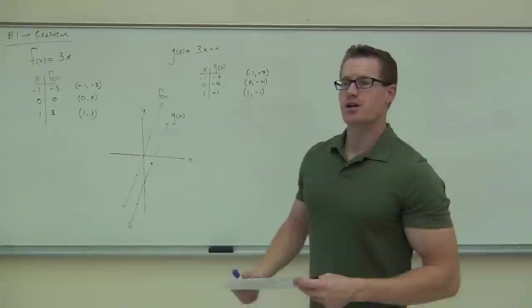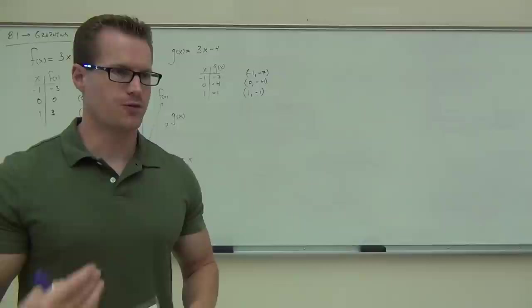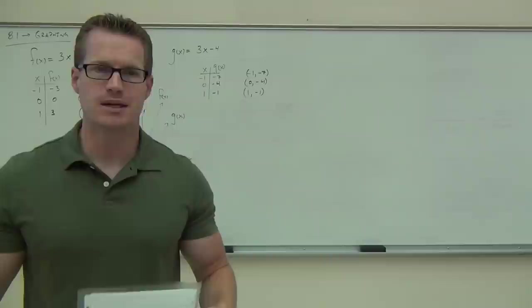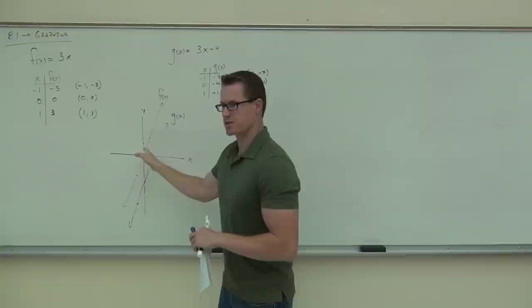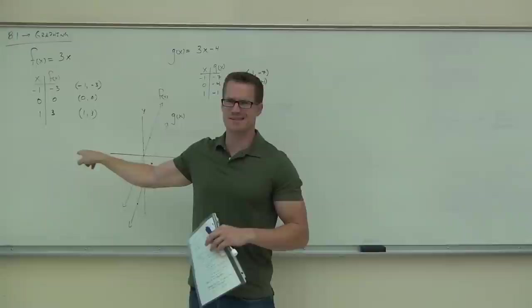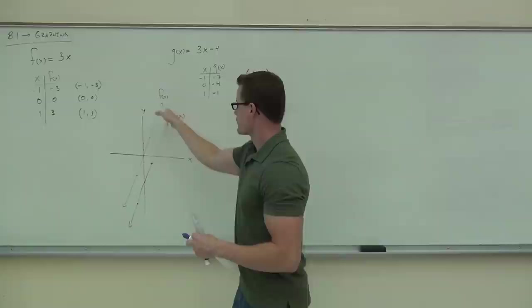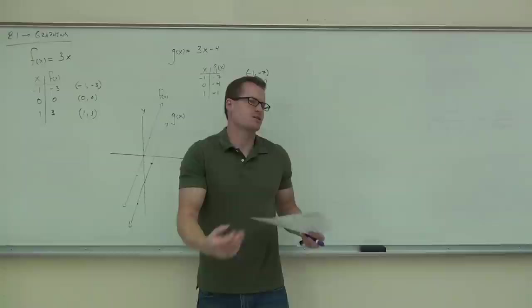Both these graphs are called functions because they pass something called the vertical line test. We're going to cover what the vertical line test is in more detail later on. But basically, if you imagine a whole bunch of vertical lines, every vertical line should touch each of these lines at only one spot. It means that the graph can't ever double back on itself — otherwise it's not a function. Every vertical line touches f of x at only one spot, and every vertical line touches g of x at only one spot. That means these things are called functions.